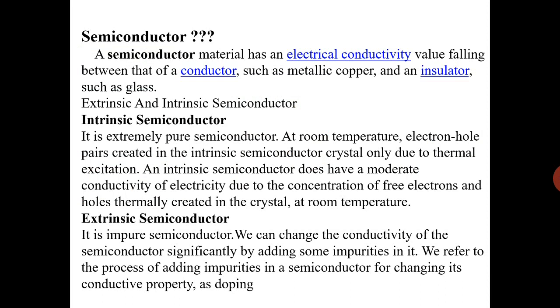What is semiconductor? A semiconductor material has an electrical conductivity falling, value falling between that of conductor such as metallic copper and an insulator such as glass. In between conductor and insulator, their conductivity appears.